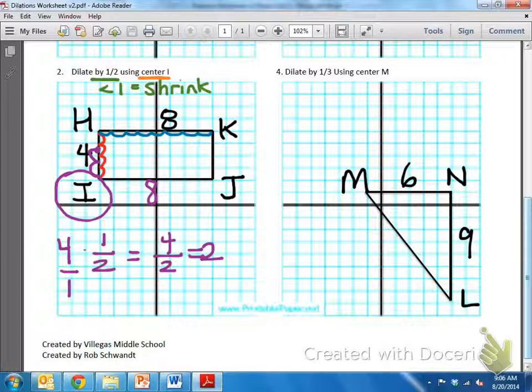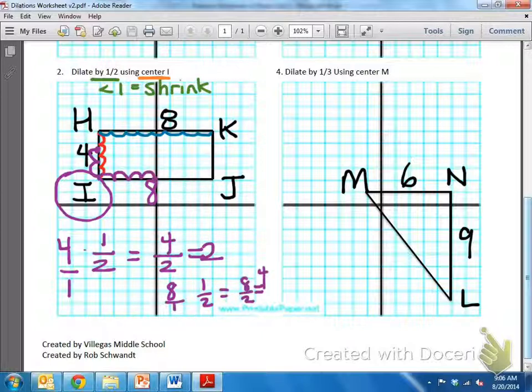We multiply eight times our scale factor, which is one half. Again, we have a whole number times a fraction. So, we put the invisible one under eight. You can also think of it as eight divided by two. But, let's multiply straight across. Eight times one is eight, one times two is two. And, eight over two becomes four.